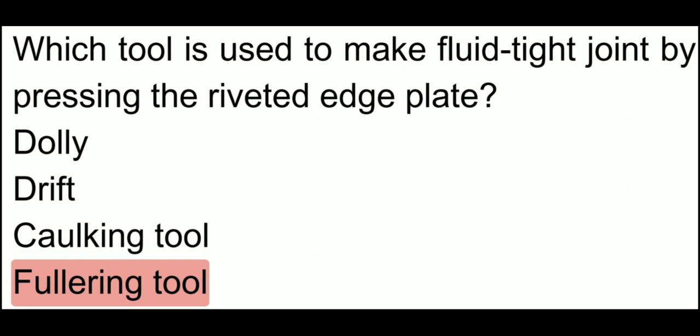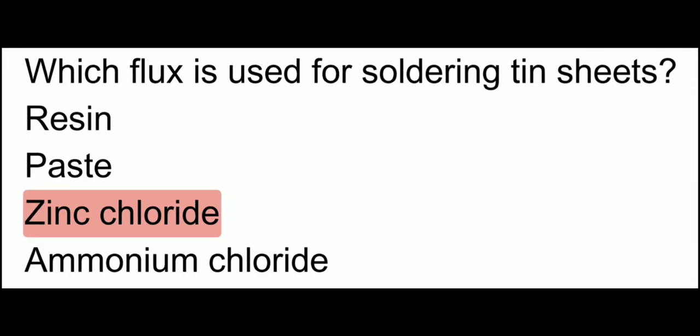Which tool is used to make a fluid tight joint by pressing the riveted edge plate? For a fluid tight joint, the tool used is the fullering tool.